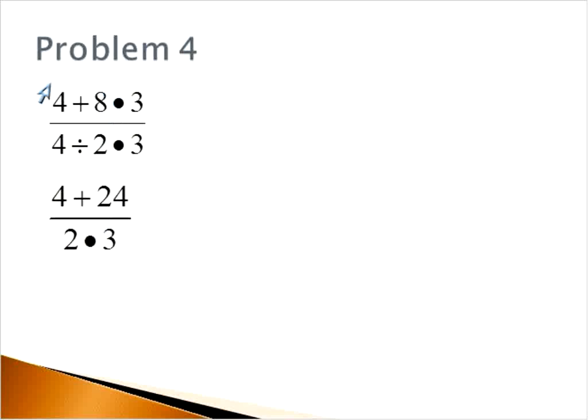So in this step, we're able to do something in the numerator and something in the denominator in one step. Because we have to solve the numerator first and the denominator before we can make them interact with each other. So in the next step, we're going to do the same thing. 4 plus 24 is 28. 2 times 3 is 6. So we can solve them both at the same time as long as they don't interact with each other.